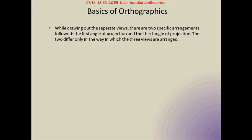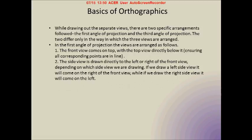In the first angle of projection, we have the front view on top — when we look at the object in the x-direction, the projection we get is what we call the front view. The top view comes directly under the front view, and the side view comes on the left or right of the front view. Whether it's left or right depends on which side view we consider: if we consider the right side view, it comes on the left-hand side, and if we consider the left side view, it comes on the right-hand side.